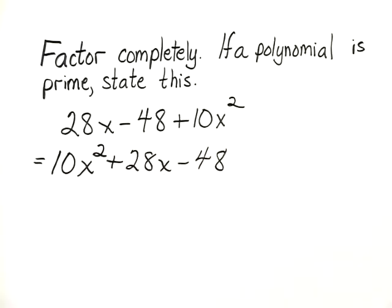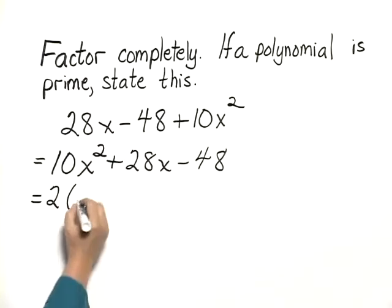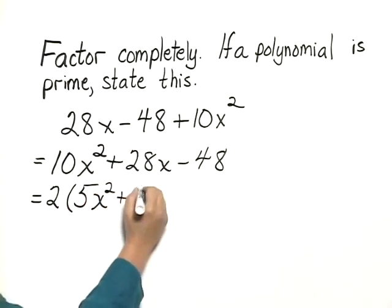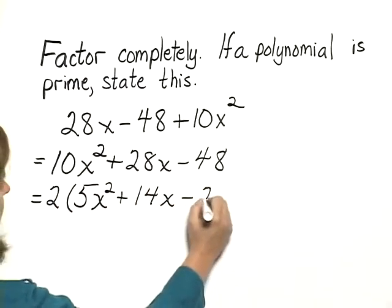The next thing we want to do is factor out any common factors. 2 is a factor that's common to all three terms, so let's factor out a 2. We have 2 times the quantity 5x squared plus 14x minus 24.